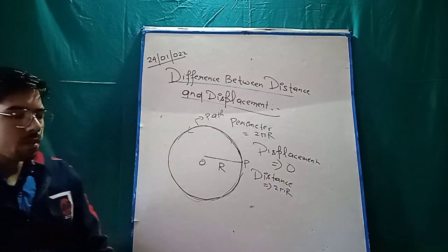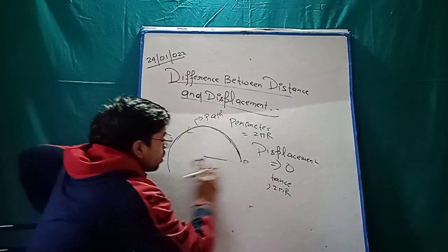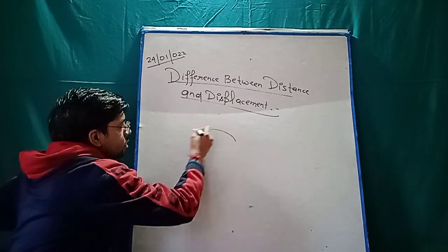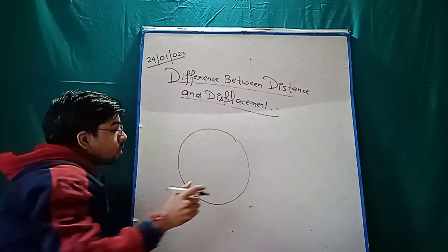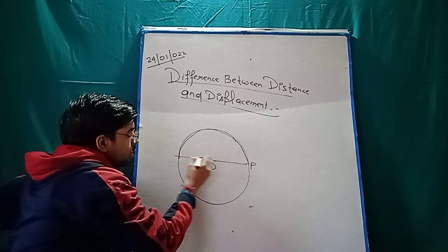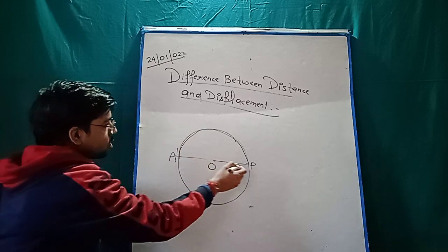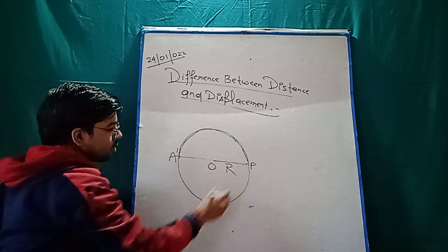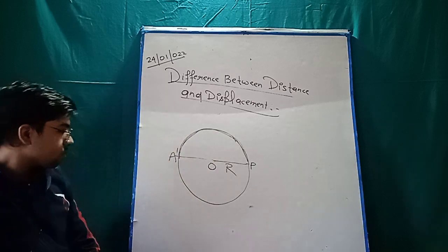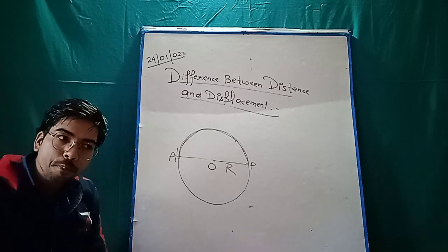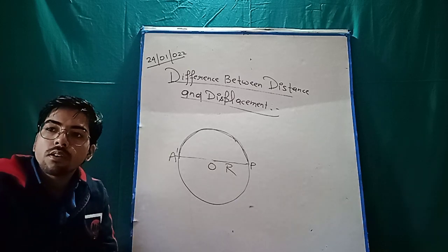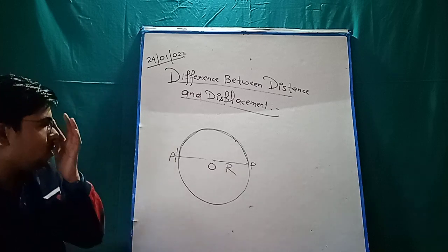Now my next question — this is my circle. The center is here, and my particle started from P and reached the diametrically opposite point A′. So it went from here to there — 180 degrees traveled. The radius of the circle is r. Can you tell me how much distance was covered and how much displacement occurred?